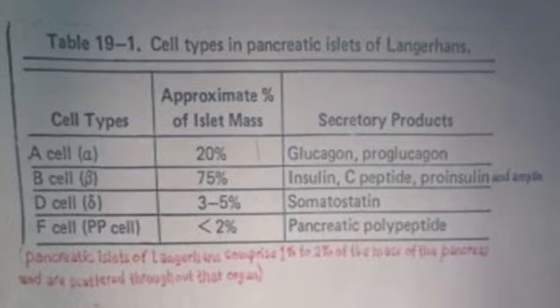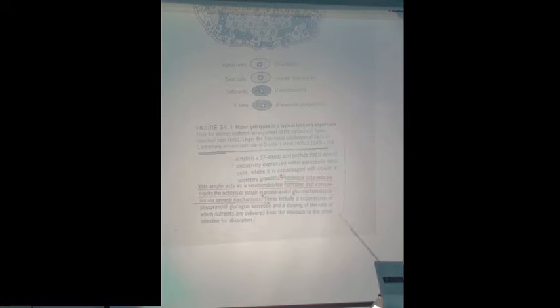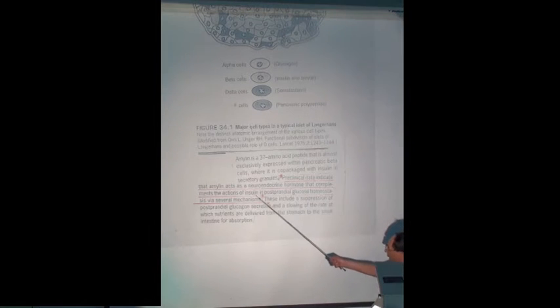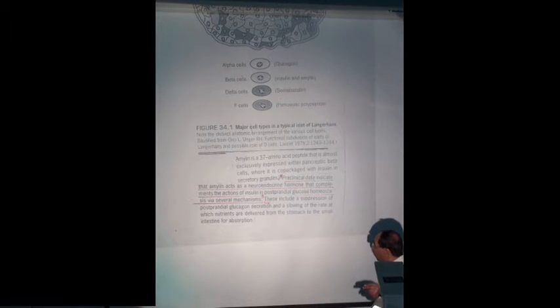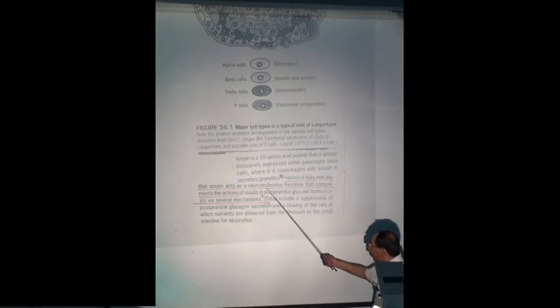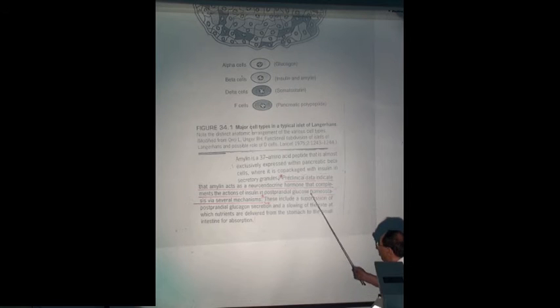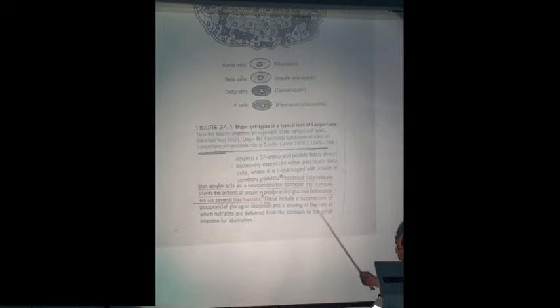Pancreatic islands of Langerhans comprise 1 to 2% of the mass of the pancreas and are scattered throughout the organ. Preclinical data indicate that amylin, which is produced along with the insulin, acts as a neuroendocrine hormone that complements the action of insulin in postprandial glucose homeostasis via several mechanisms. This includes suppression of postprandial glucagon secretion and slowing of the rate at which nutrients are delivered from the stomach to the small intestine for absorption.